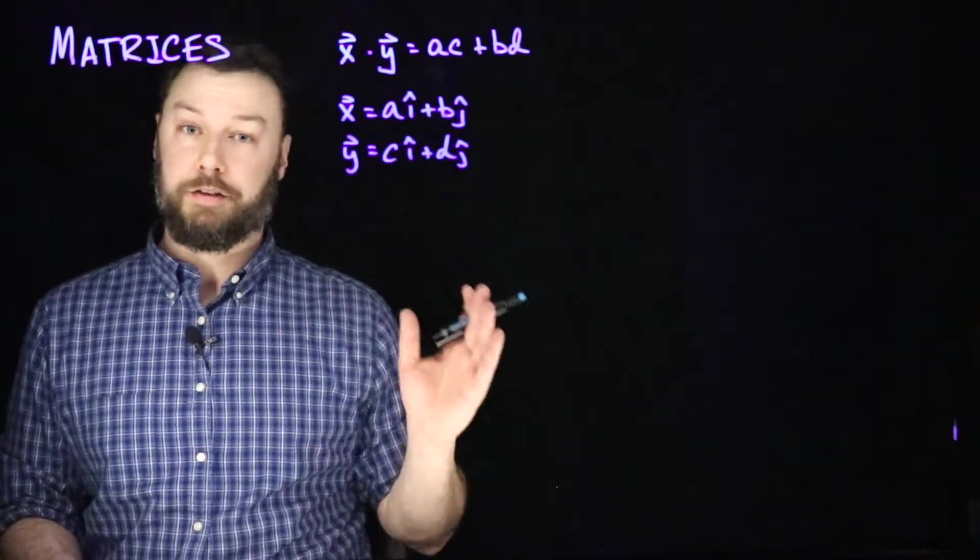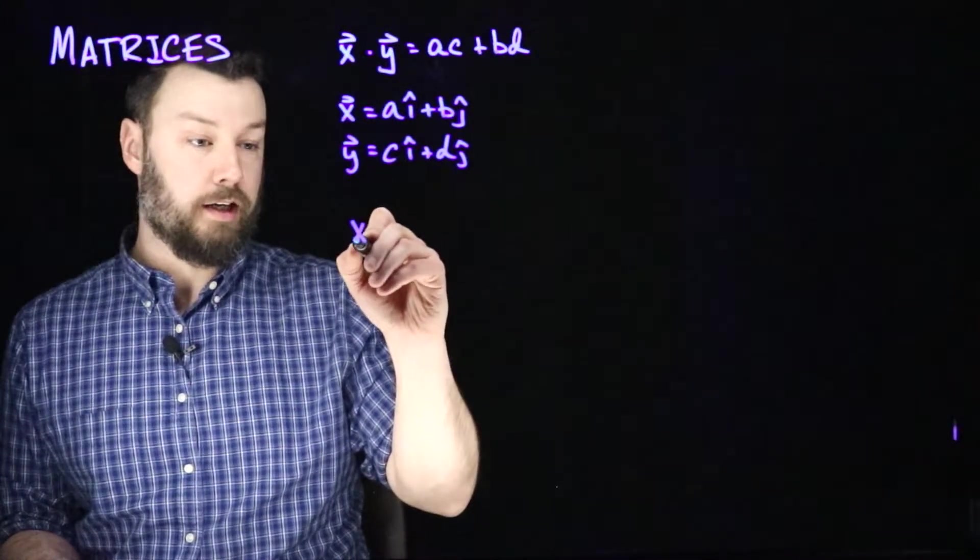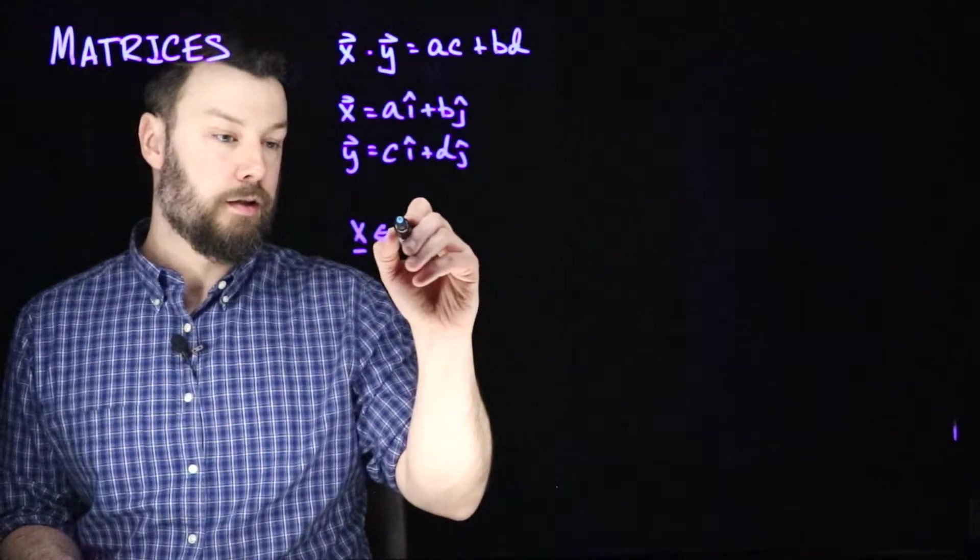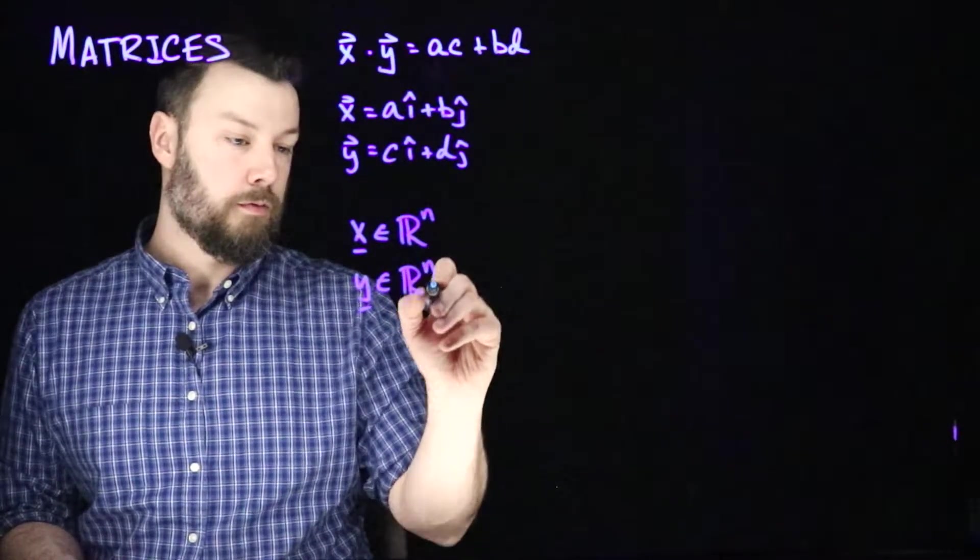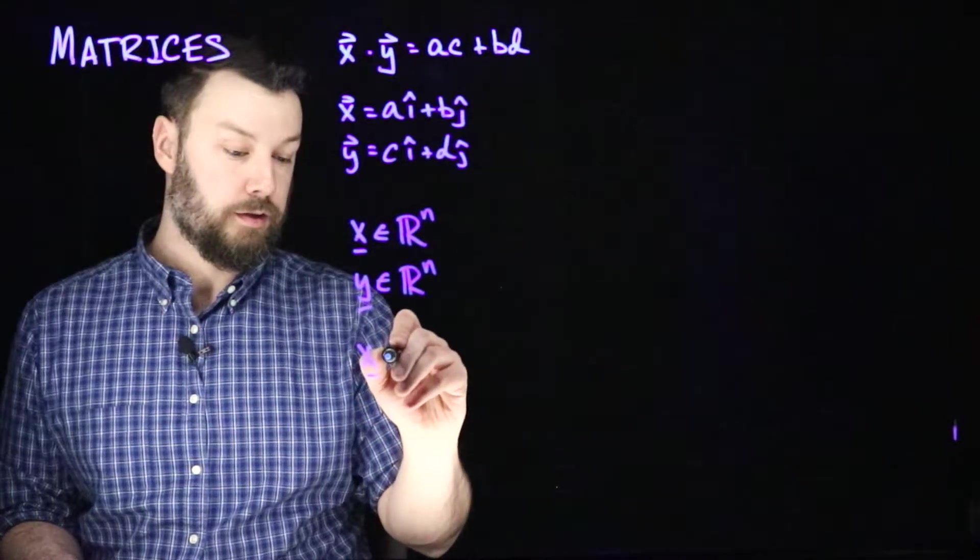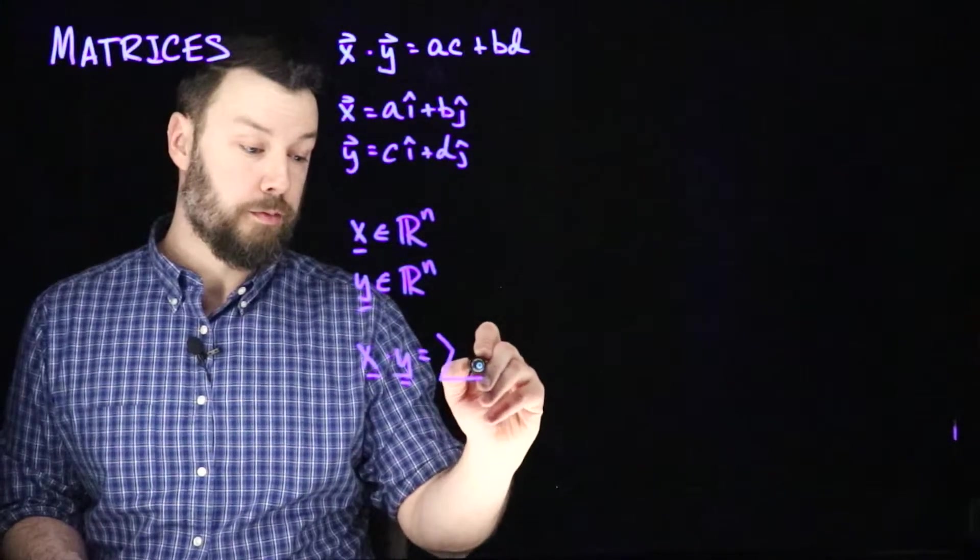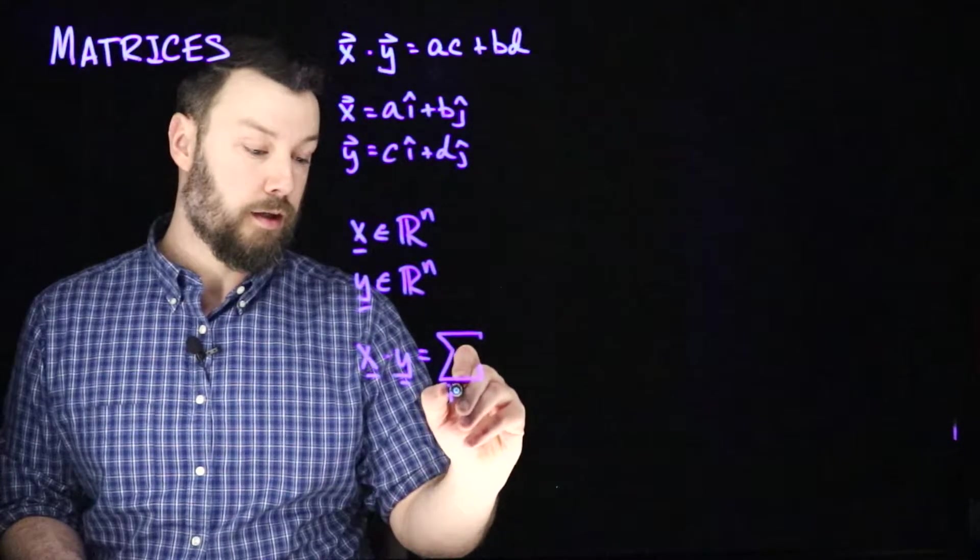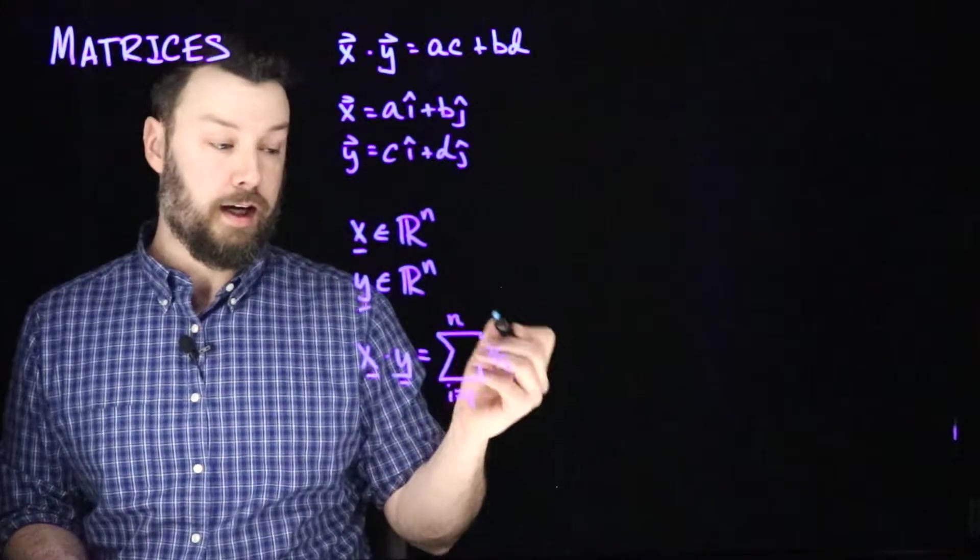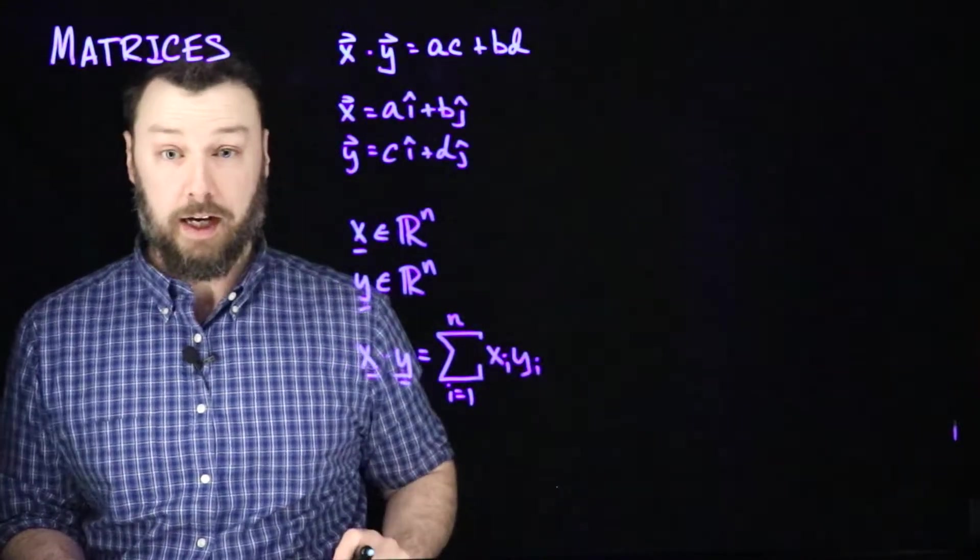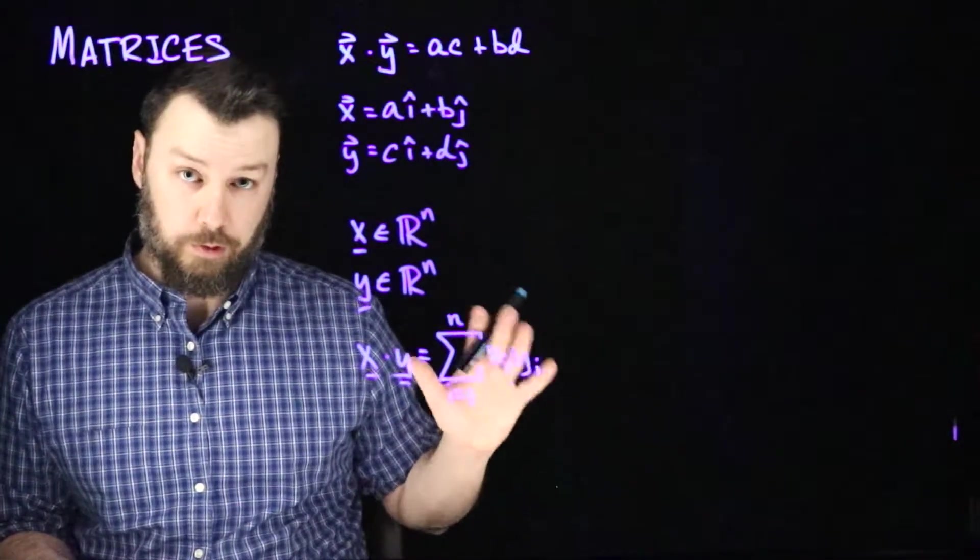Of course, this is a thing that we can easily generalize to arbitrary vectors in RN. If we have an x in RN and a y in RN, then we could say that x dot y equals a summation over the indices i from 1 to n of x sub i, the ith component of x, multiplied by the ith component of y. This summation symbol we'll use quite a lot, it's just a concise way to write a sum of all of the components.